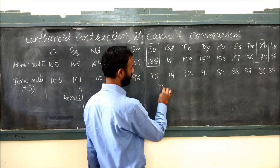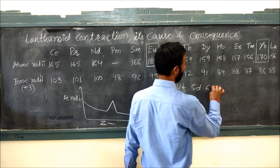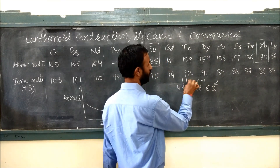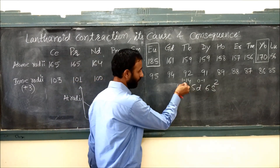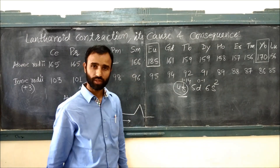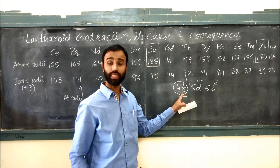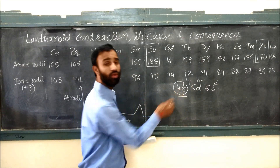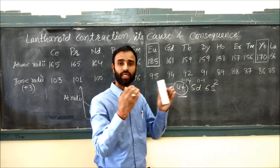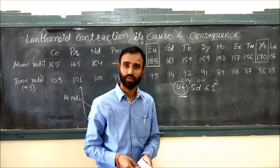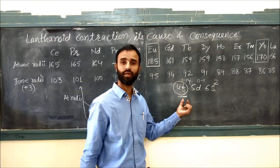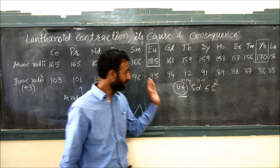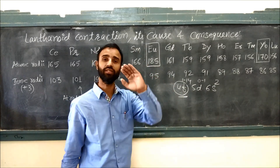In case of F block elements — lanthanoids — there is 4F, 5D, and 6S. There is a filling of the 4F orbital, and the F orbital is deep inside. It tries to shield the outer electrons, but shielding of 4F is very poor. Because of poor shielding of 4F, it cannot protect outer electrons from the attraction of the nucleus. That's why there is a decrease in size.